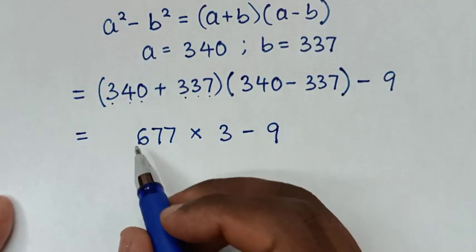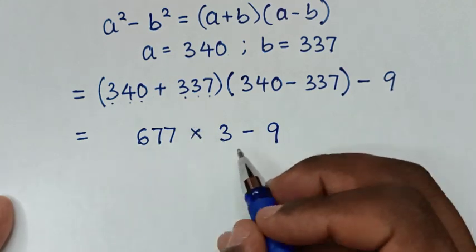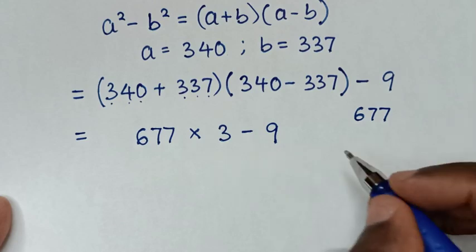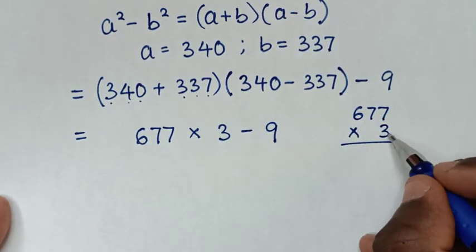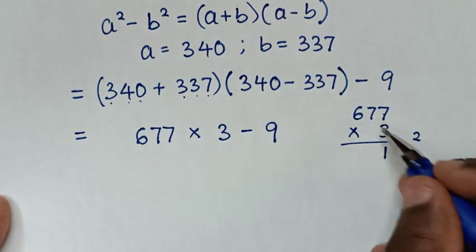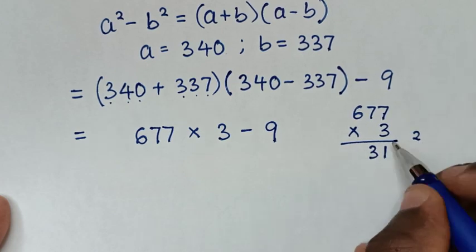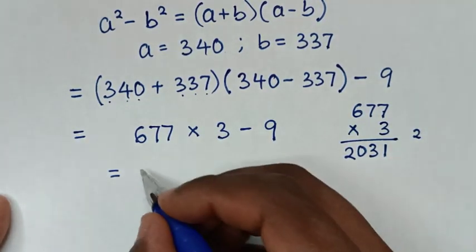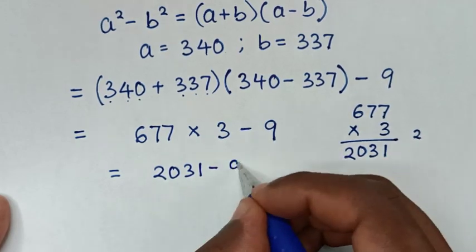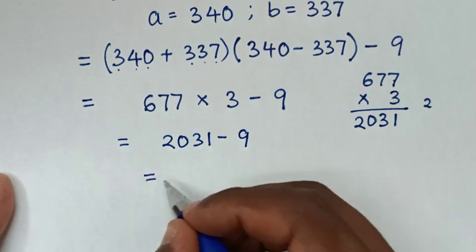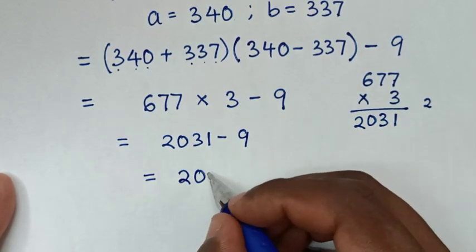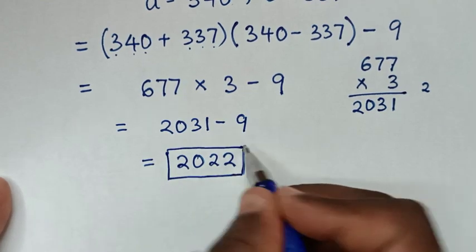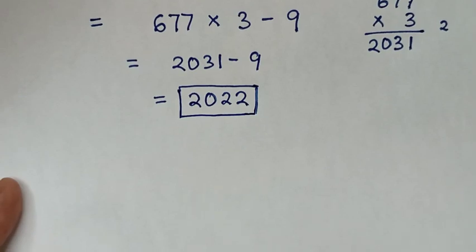We solve from left to right, starting with multiplication. Multiplying 677 times 3: 3×7 is 21 carry 2; 3×7 is 21 plus 2 is 23 carry 2; 3×6 is 18 plus 2 is 20. So 677×3 equals 2031. Then 2031 minus 9 is 2022. Therefore this is our final answer.